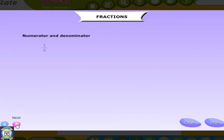Fractions: numerator and denominator. Every fraction has two numbers. Let us see what they are called. The number at the top is called the numerator.